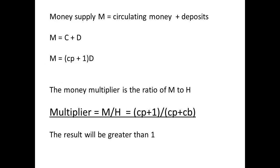Money supply, or money stock, is the sum of circulating money plus deposits: M equals C plus D. Since C equals Cp times D, then M equals Cp plus 1 times D. The ratio of M to H is the money multiplier, M divided by H, which gives us Cp plus 1 divided by Cp plus Cb.